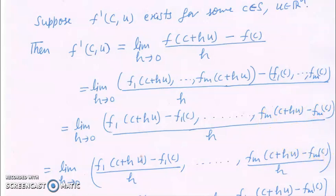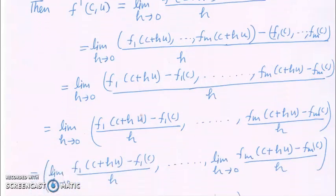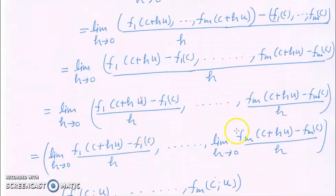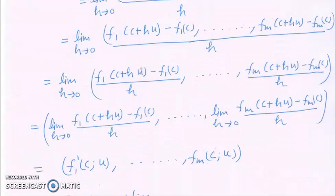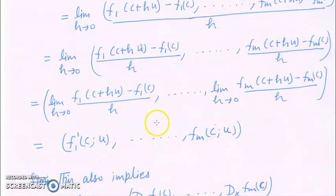We can divide h into each coordinate separately. Then we can take the limit inside and apply it to each coordinate. When we apply the limit to each coordinate, by the definition of the directional derivative of fi, we can write it as fi'(c; u).